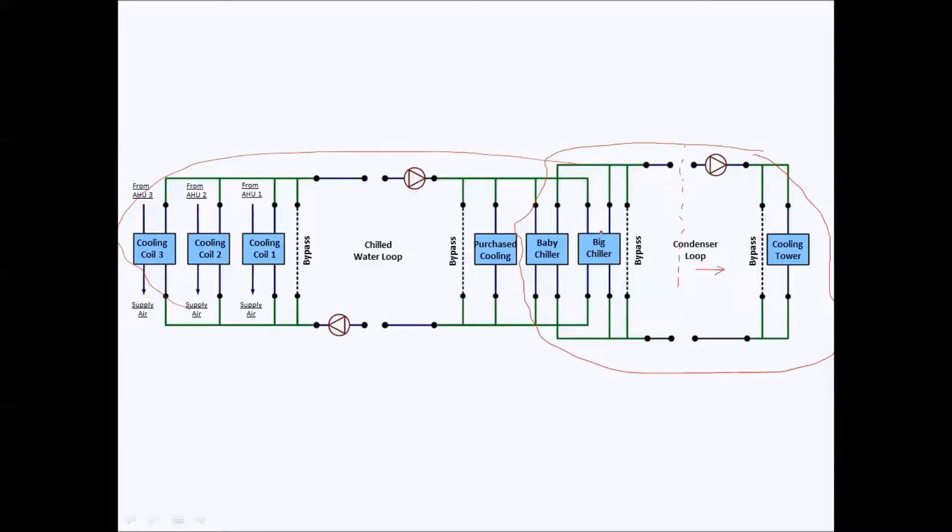While in chilled water loop, this part will become supply side because these chillers and purchased cooling district cooling would be providing chilled water to these AHU cooling coils. And this would become demand side. This would become supply side here, this would become demand side, and this will become supply side.